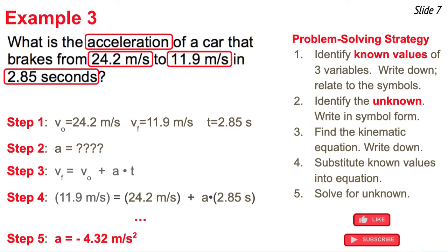Why is there a negative value? Because that indicates a slowing down motion here for an object that has a positive velocity. So this object is decelerating or slowing down. This illustrates how you use the big four and this problem solving strategy to solve for an unknown variable value.